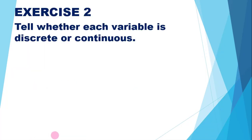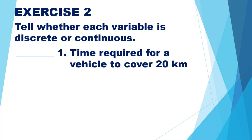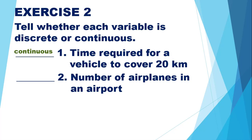Moving on to Exercise number 2, you have to tell whether each variable is discrete or continuous. For number 1, the time required for a vehicle to cover 20 kilometers — since we're talking about time, we can have fractions, like 15 minutes which is one-fourth of an hour. So it is a continuous variable. For number 2, number of airplanes in an airport — there is no 2.5 airplanes, so it is a discrete variable: 0, 1, 2, 3, and so on.